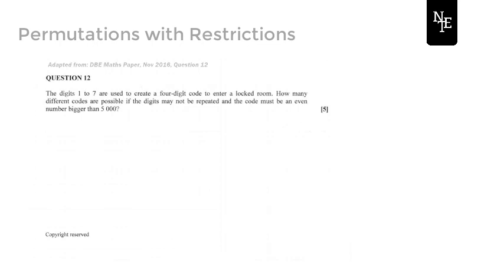Welcome back. So now we've reached our final video in this little series about permutations with restrictions. So what we are doing now is creating passwords. So if you think back, we've looked at arrangements using letters, and then we moved on to arrangements using people. Now we're going to be looking at arrangements using numbers — so digits.